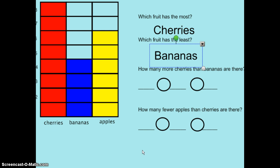Now I'm going to compare my groups. My question is, how many more cherries than bananas are there? When I see those words 'how many more,' I know I need to compare the groups. I'm going to start off by matching my groups together. I can see that cherries and bananas both got one vote, both got two votes, both got three votes, both got four votes.